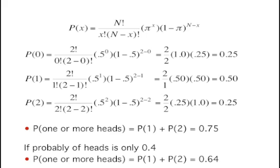Applying this to the coin flip example, we get the following probabilities for 0, 1, and 2 heads.